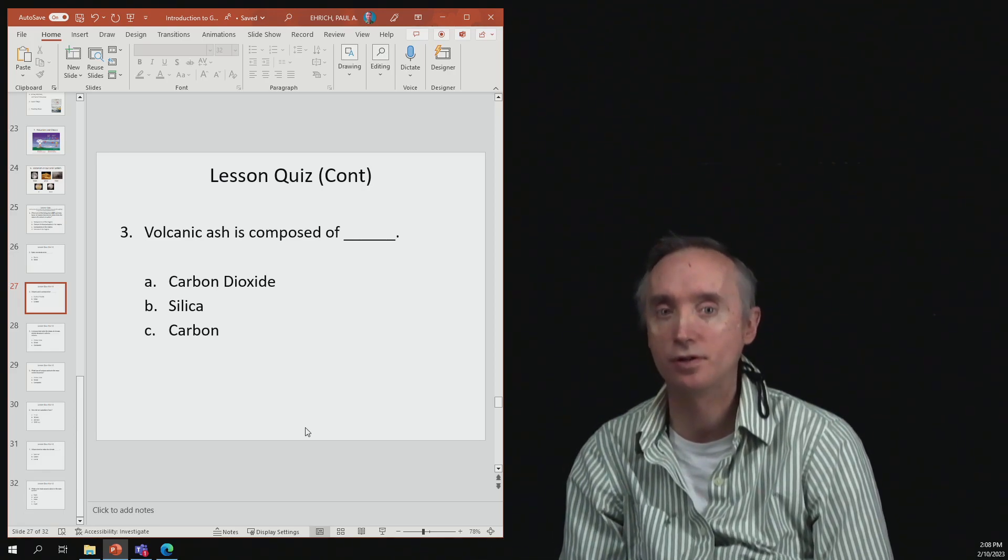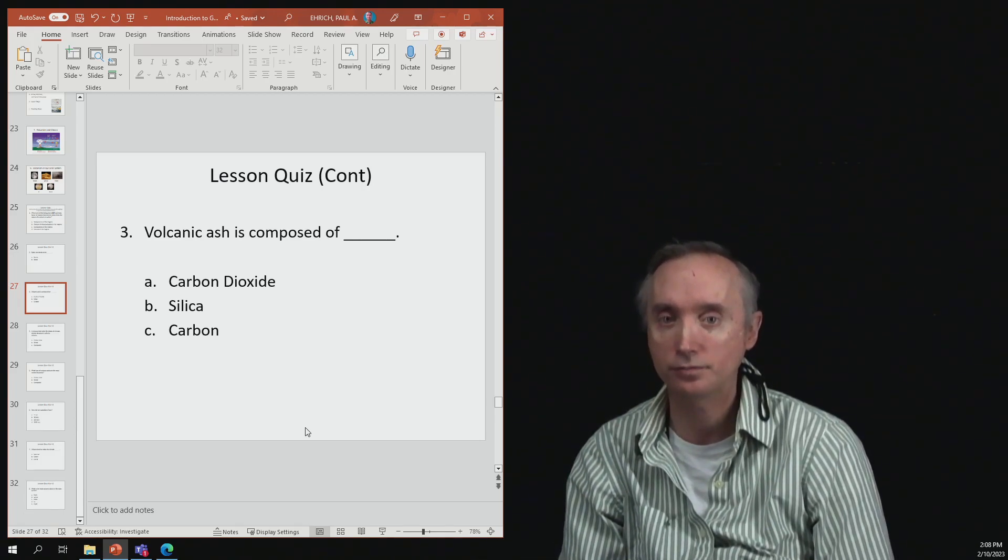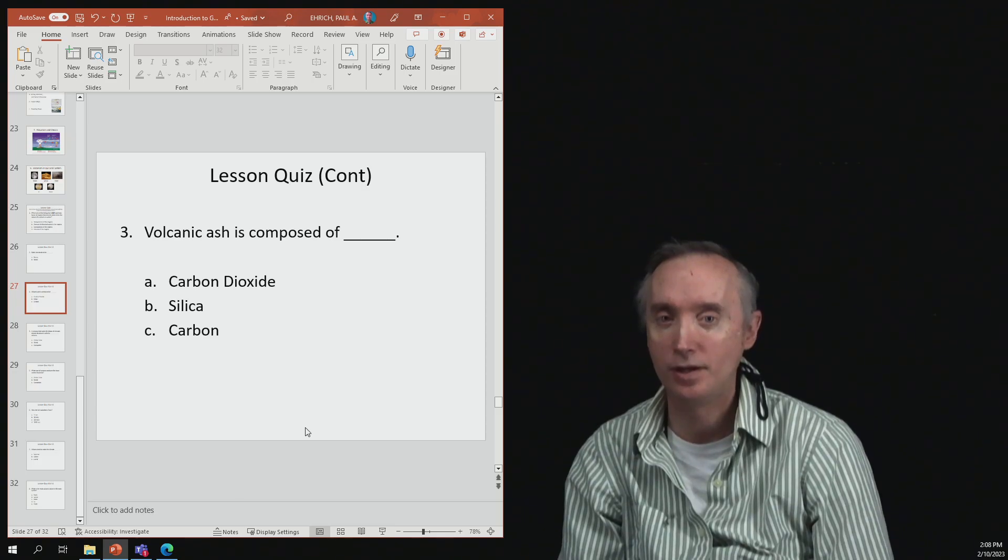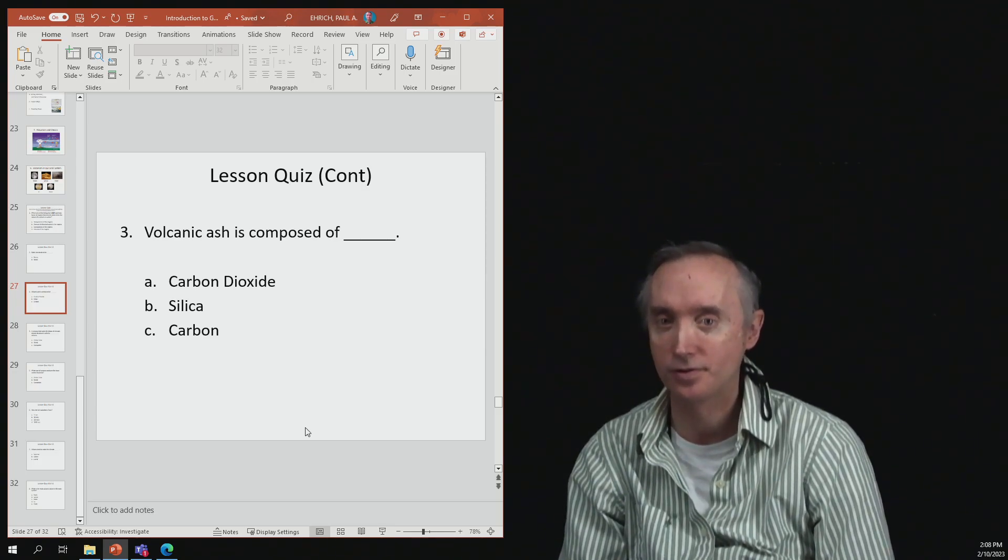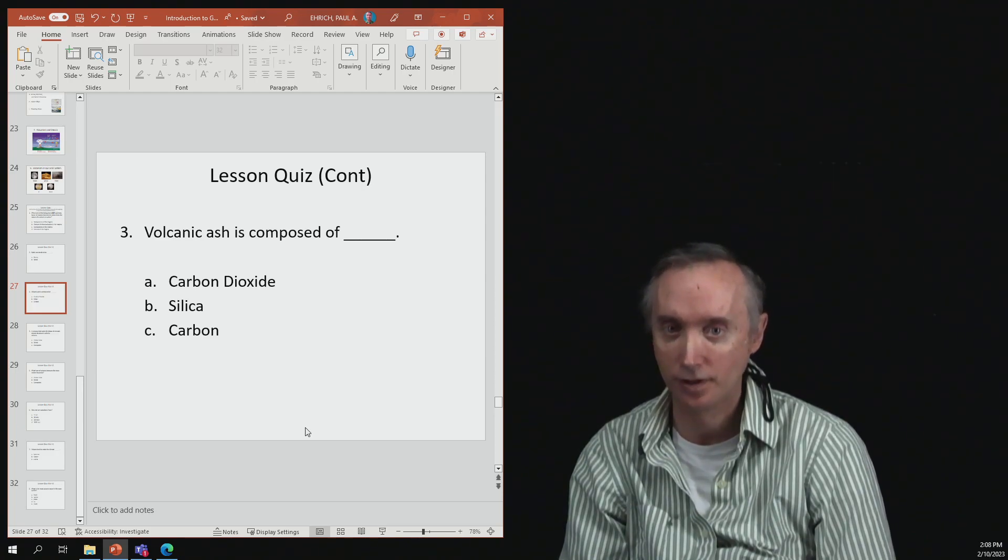Volcanic ash is composed of what? Volcanic ash is composed of silica.